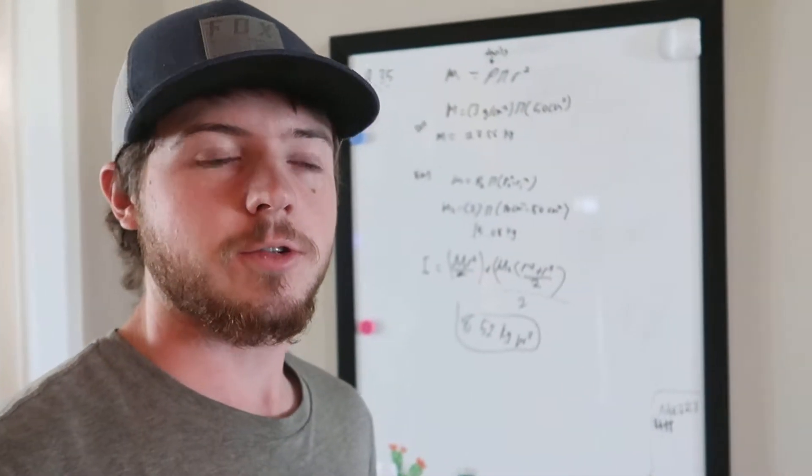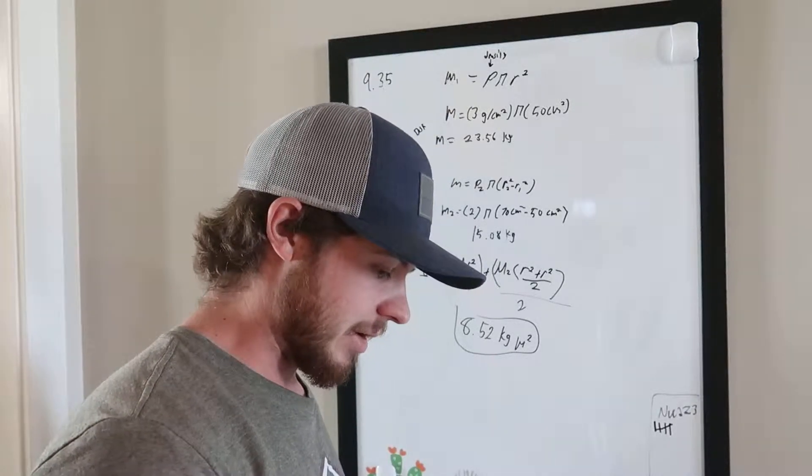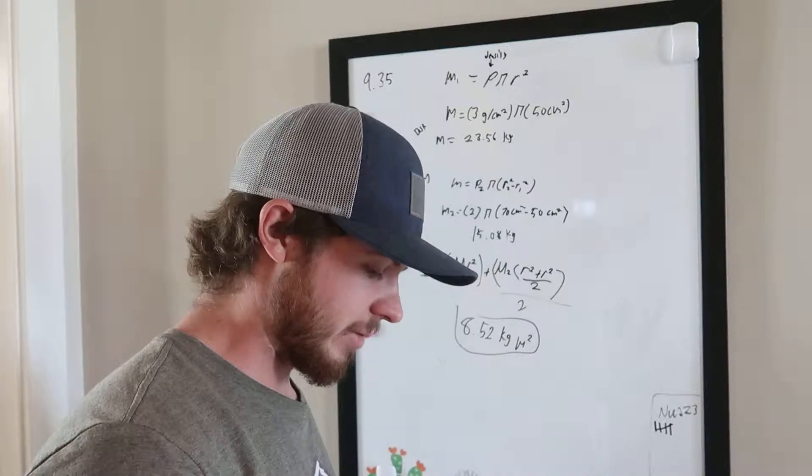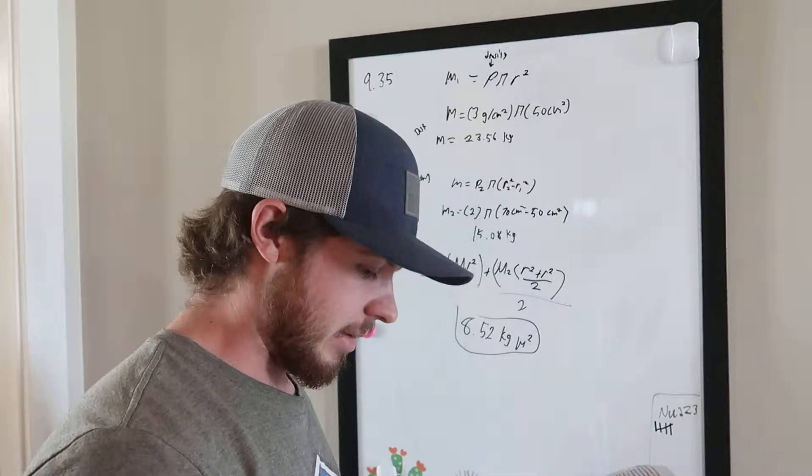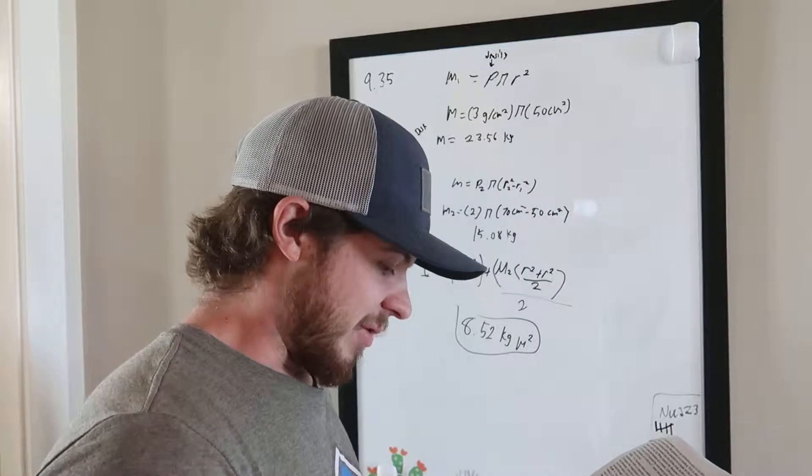We are looking at question 35 from chapter 9. It says a compound disk of outside diameter 140 centimeters is made up of a uniform solid disk of radius 50 centimeters and an area density of 3 grams per centimeter squared.